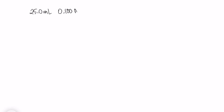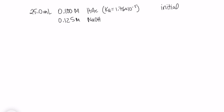This is a 25 milliliter sample of 0.1 molar acetic acid and the Ka is 1.76 times 10 to the minus 5. We're going to be reacting this with 0.125 molar NaOH in different amounts. We have several questions: we want to know the initial pH before any base is added, and then after adding 10 milliliters, 20 milliliters, and 30 milliliters of base.